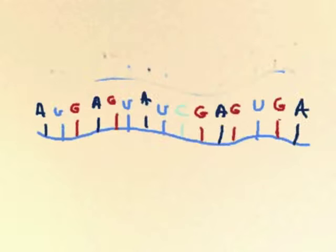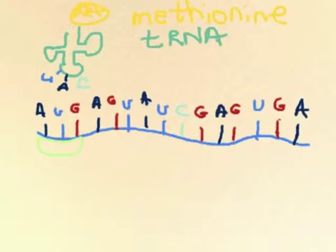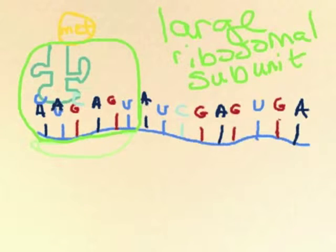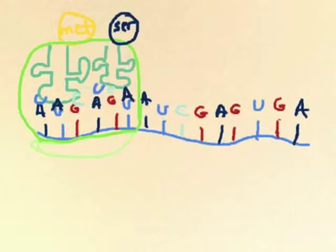For the mRNA to be read, it must be sandwiched between two ribosomal subunits. Once the small ribosomal subunit is on, a tRNA will read the mRNA and bind to it. The large ribosomal subunit comes in next, and then another tRNA.